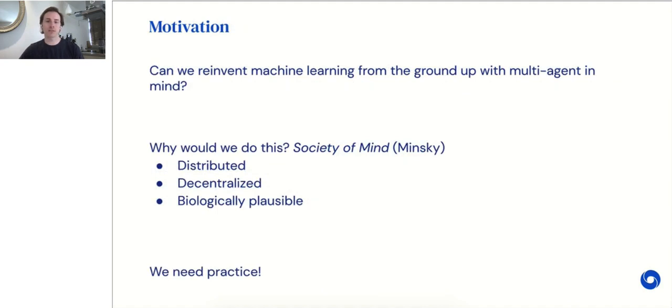The motivation for this work was less about singular value decomposition or PCA and more about shifting the way we think about algorithm design. Can we reinvent machine learning from the ground up with multi-agent in mind? Why should we do this? One theory of cognition developed by Marvin Minsky views the mind as being built from a society of sub-agents. In contrast to the popular single objective or optimization paradigm of AI and machine learning, a society of mind might be more naturally distributed, decentralized, and biologically plausible.